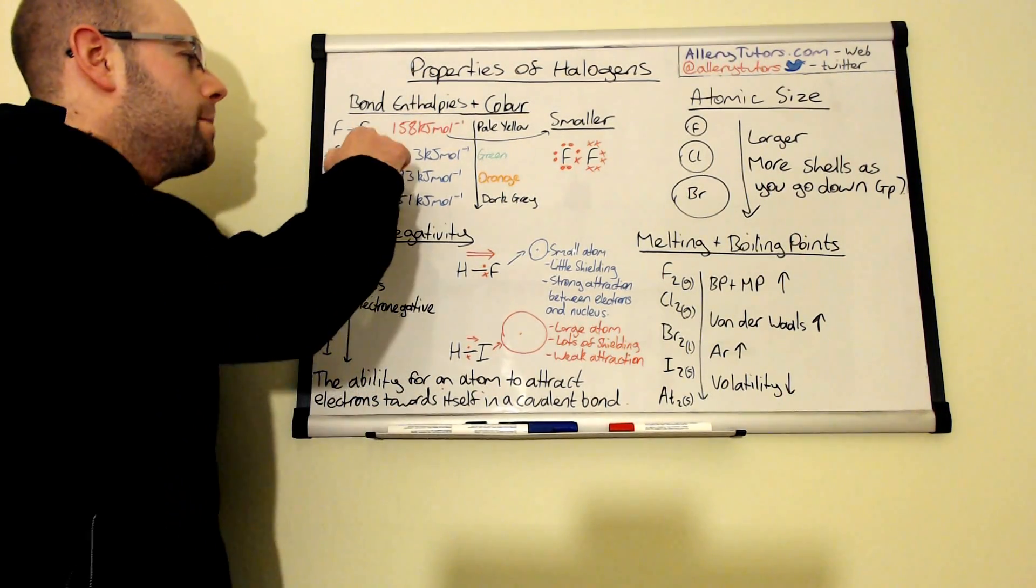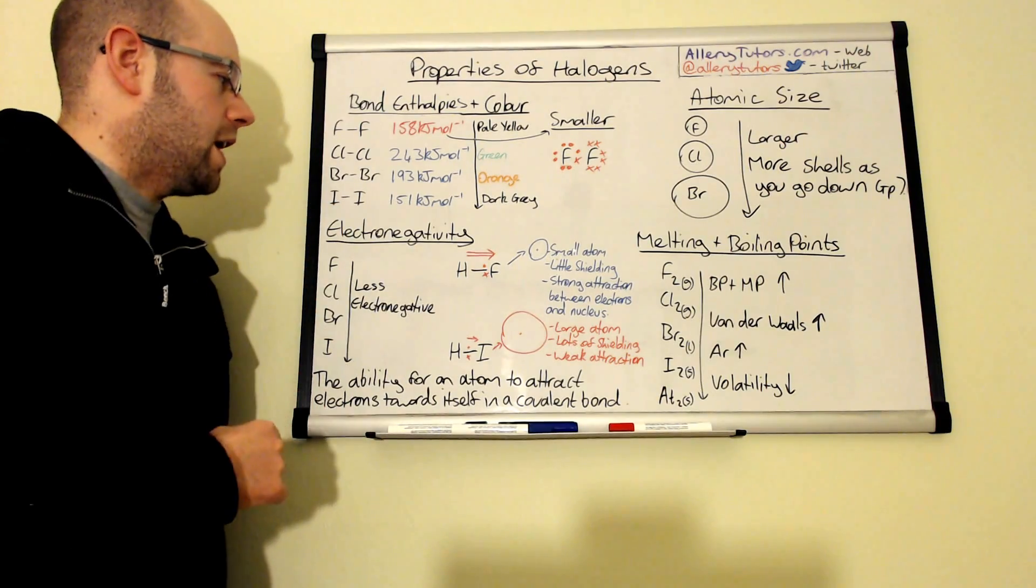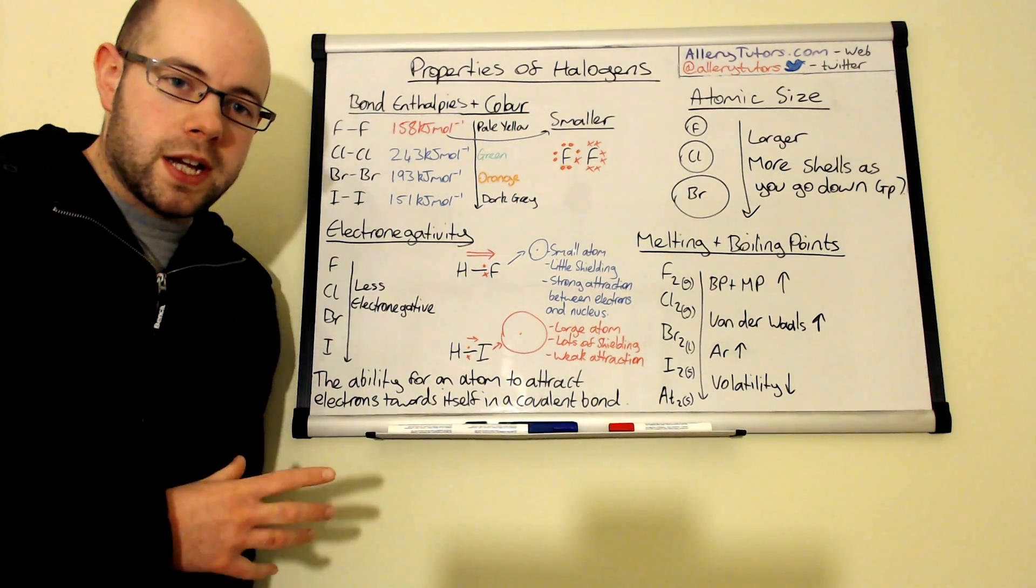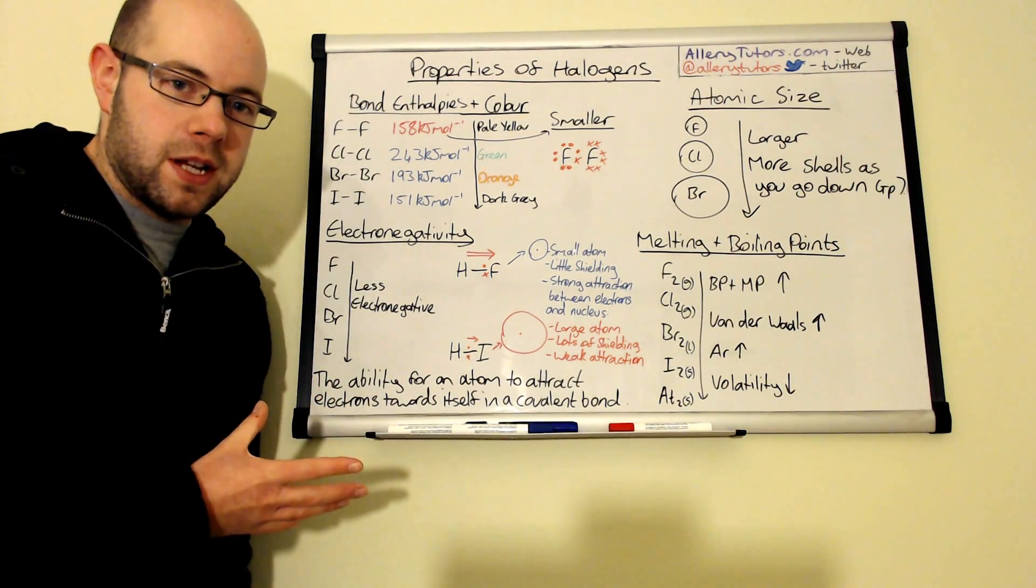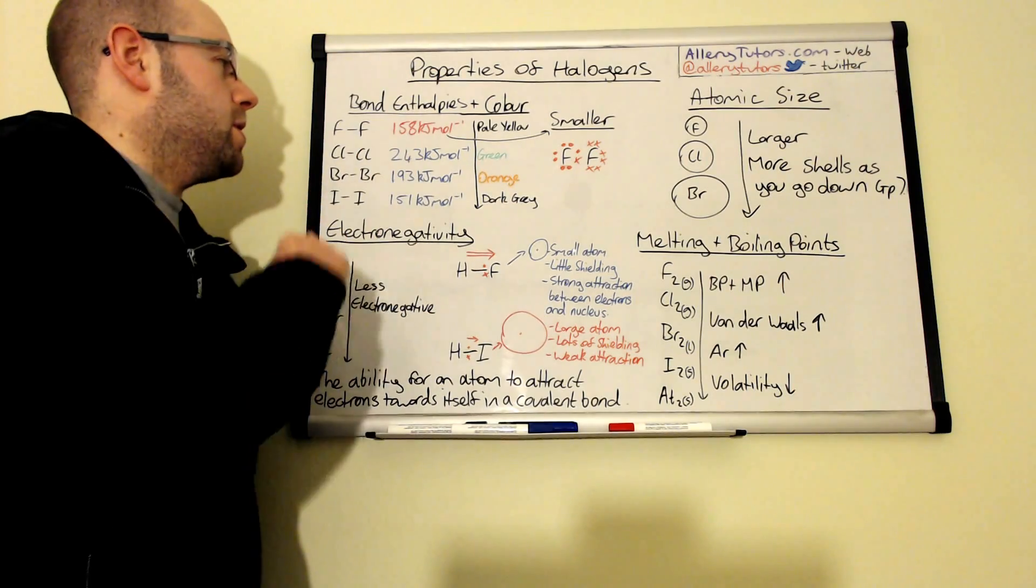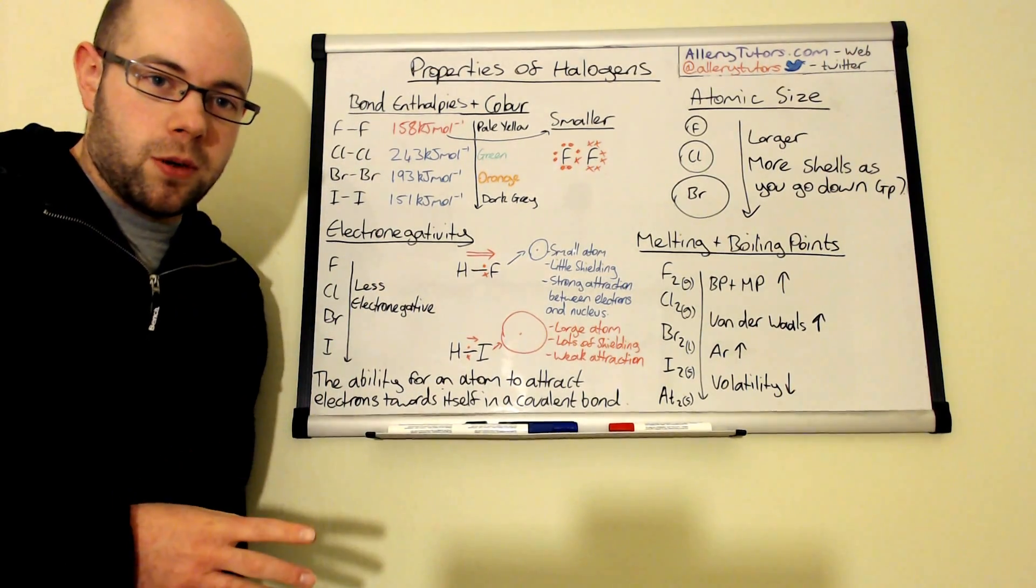They never go around on their own and the bonds between each of the halogens as you can see gets weaker as we go down the group seven with the exception of fluorine which I'll come on to in a minute.